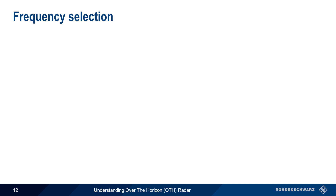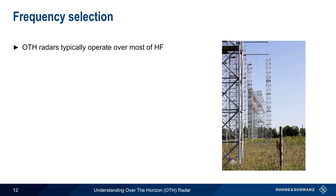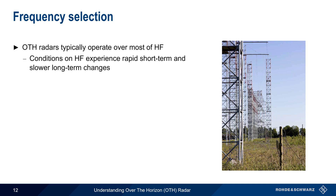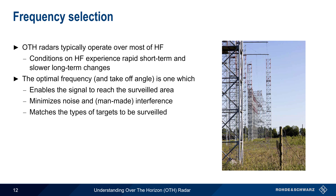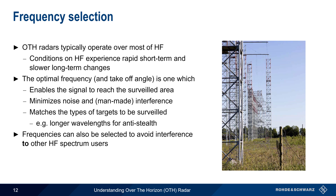OTH radars typically operate over most of the HF frequency range, which is necessary to adapt to both fast short-term and slower long-term changes in ionospheric propagation. The frequency of operation and the takeoff angle must be chosen to match several criteria: the signal must be able to propagate to the surveilled area and back; the frequency should minimize noise and man-made interference; and in some cases, the frequency must be chosen to match the type of targets to be surveilled. For example, longer wavelengths are better for detecting stealth or low-observability targets. Additionally, because HF is crowded and has very limited bandwidth, frequencies may also be chosen to avoid causing interference to other HF spectrum users.